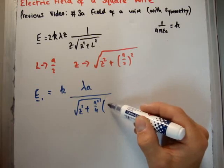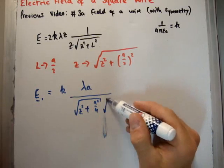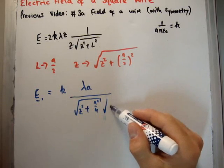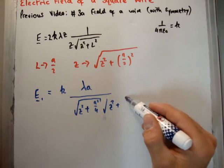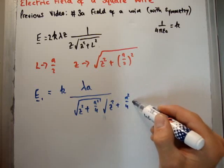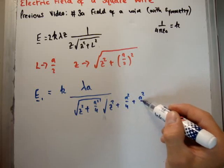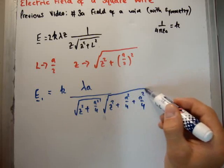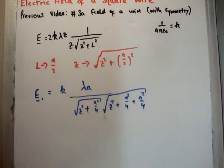And finally, z squared plus a squared over four, plus a squared over four. So that's the z squared plus the l squared, right? Now that's the field for one wire.